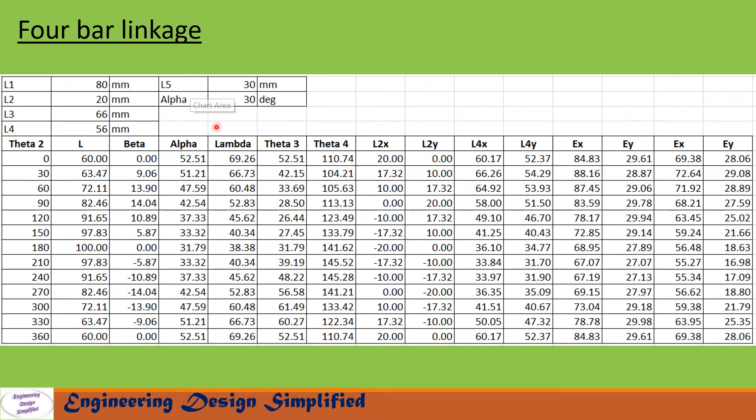In this video, we have taken again the same problem we discussed in position and displacement analysis of 4 bar linkage and that link for that video is given in the description box. Here the link lengths are: fixed link length L1 equal to 80 millimeter, L2 crank 20 millimeter, L3 coupler 66 millimeter, L4 follower 56 millimeter, L5 that is DE 30 millimeter, and alpha is 30 degrees.